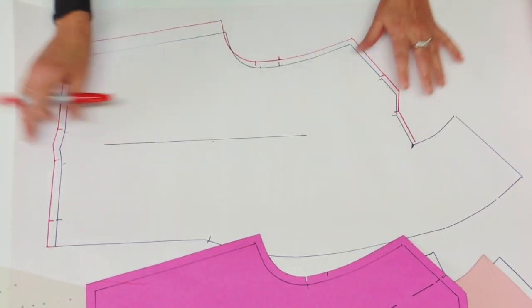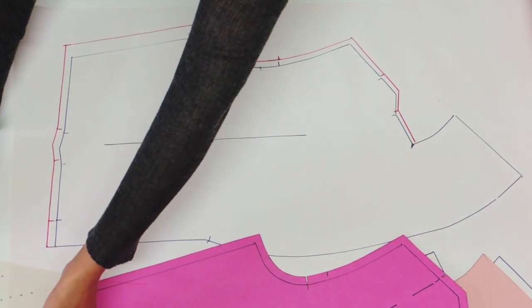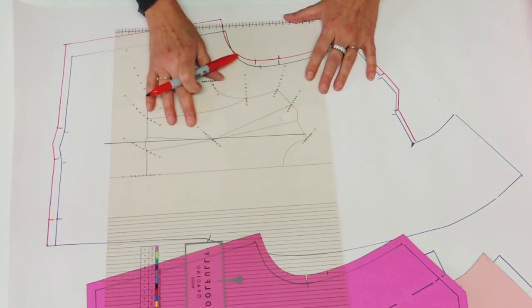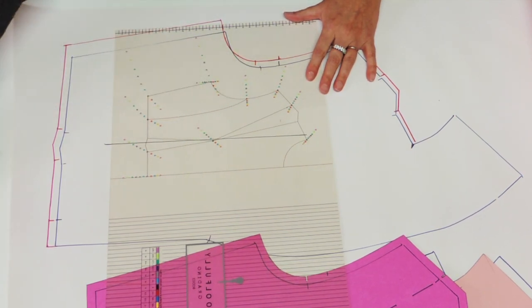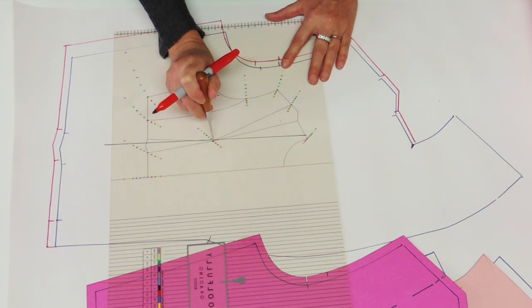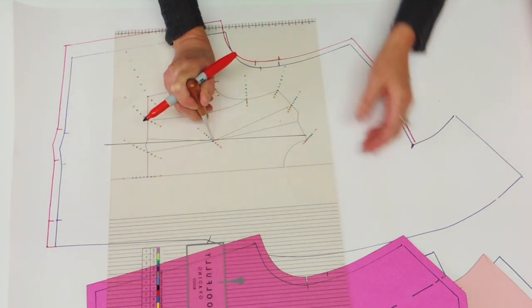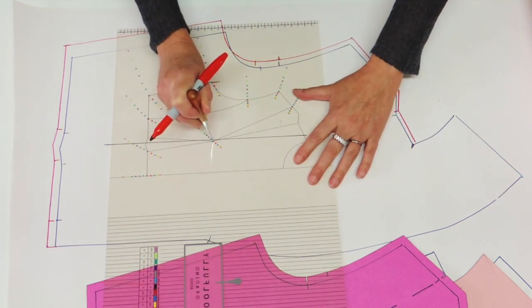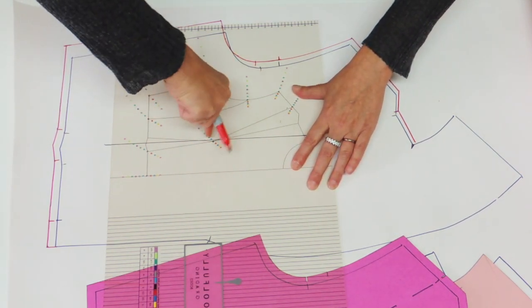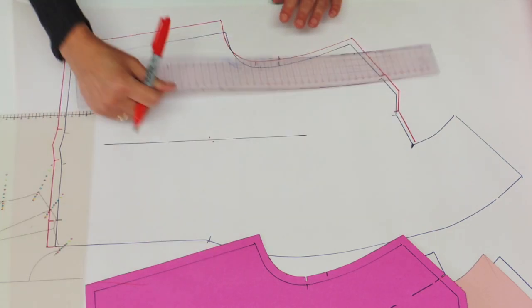So we did grade all the contour but we still have to grade the pivot of the dart. So I'm going to put my pivot right on my pivot grading point and I'm going to place my grain line parallel to the grain line, and I'm going to point out the pivot for my new dart. So I could retrace my dart.